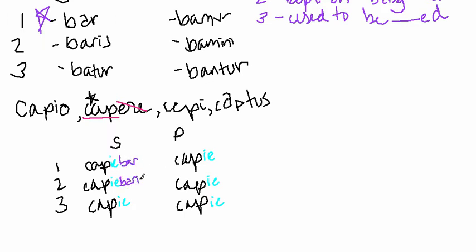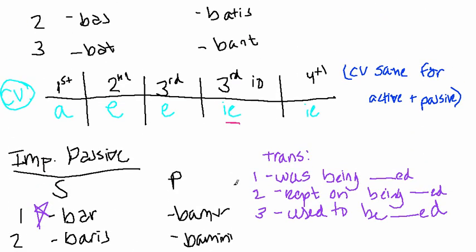Bar, baris, batur, bamur, bamini, and bantur. And there you have it. Let's just go through them one by one. Capiebar, capiebaris, capiebatur, capiebamur, capiebamini, capiebantur. It's a mouthful. So, there you have it. Those are your imperfect active and passive endings.